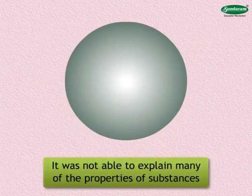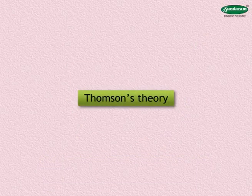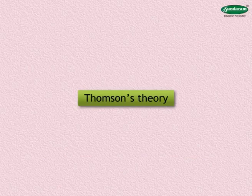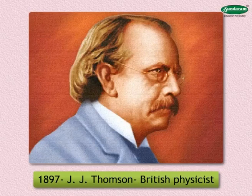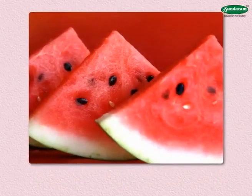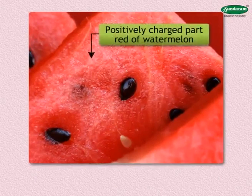But Dalton's theory failed to explain the positive and negative charges on an atom. Now let us move on to Thompson's theory. In 1897, J.J. Thompson, the British physicist, proposed a different theory. He compared an atom to a watermelon — a watermelon has a red edible part with black seeds in it. He proposed that an atom has a positively charged part like the red part of a watermelon.